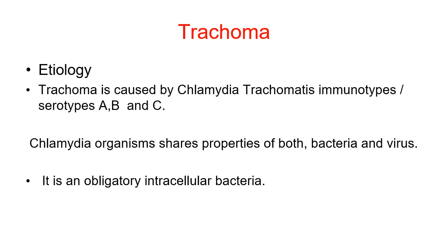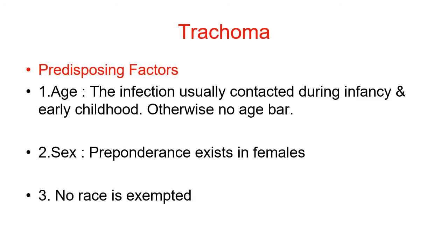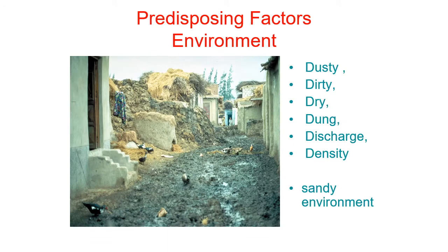Trachoma is caused by Chlamydia trachomatis immunotypes (serotypes) A, B, and C. Chlamydia shares properties of both bacteria and viruses and is an obligate intracellular organism. Predisposing factors include age — the infection is usually contracted during infancy and early childhood. Environmental factors include dusty, dirty, dry surroundings with dung, discharge, and density of population, and sandy environments.